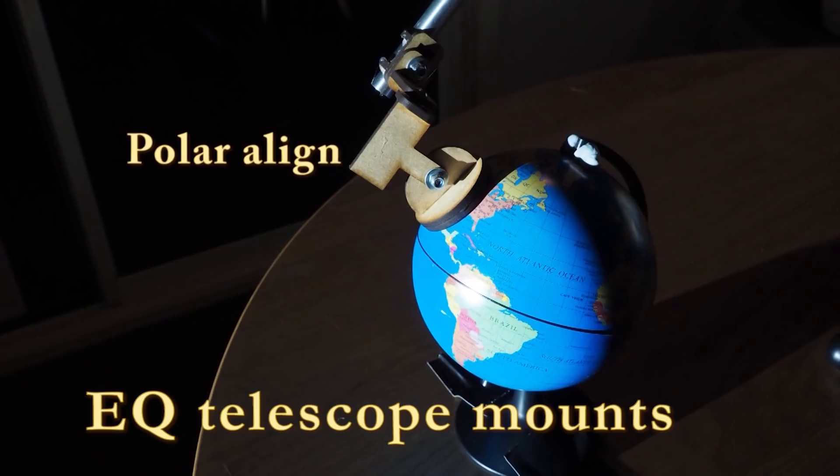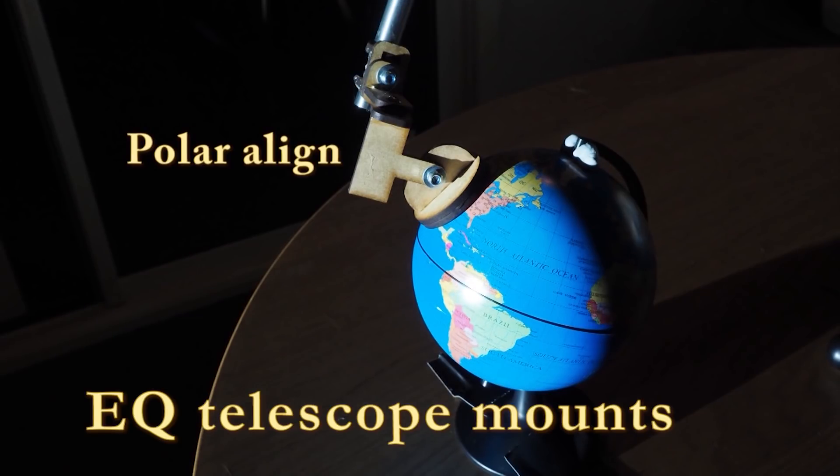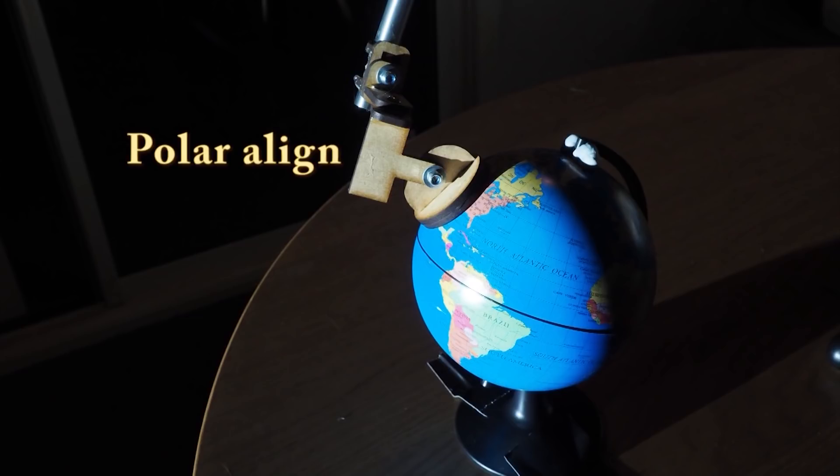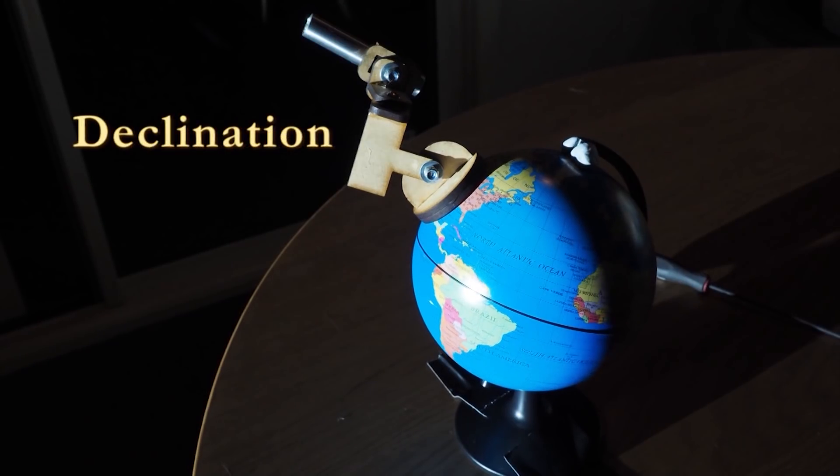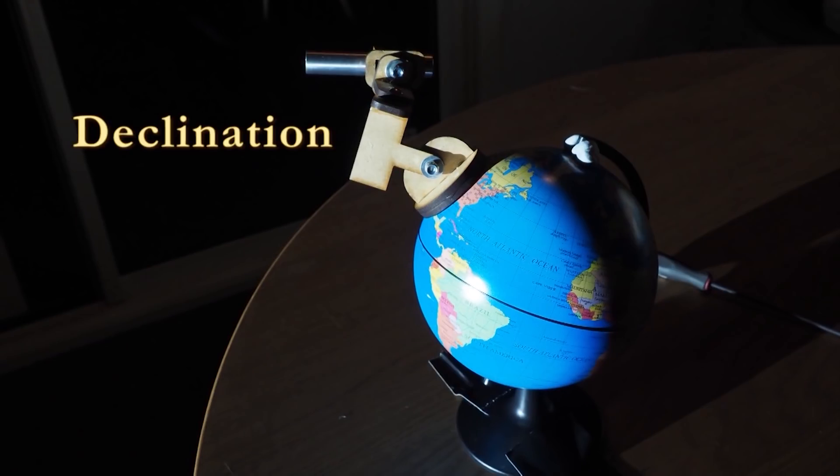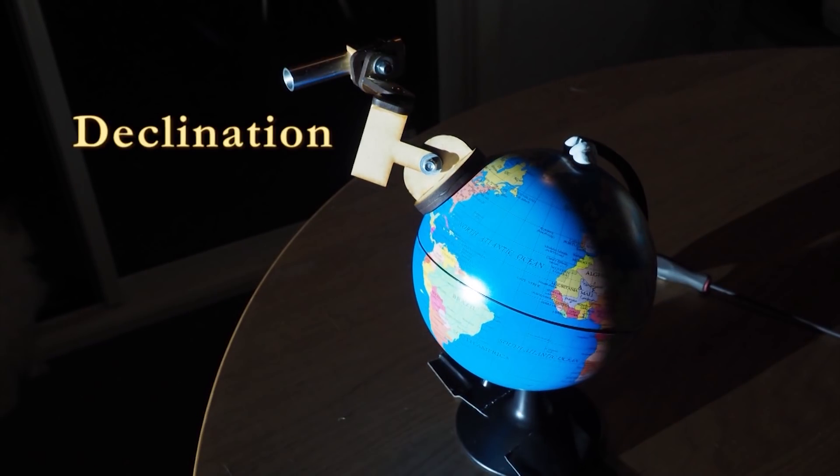On a globe, the EQ mount's polar axis has to align with either the northern or southern celestial pole in order for it to cancel out the Earth's rotation. The second axis, declination, allows you to move 180 degrees from horizon to horizon while still countering the Earth's movement through the polar axis.